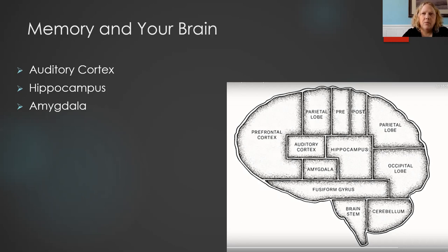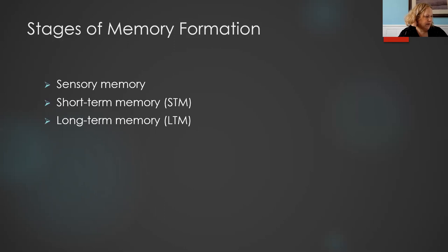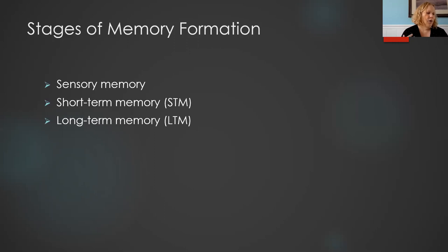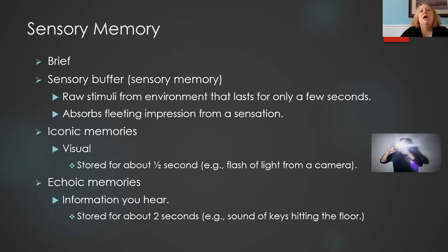People suffering from PTSD have problems getting rid of traumatic memories because of their emotional memories. We're going to talk about the three stages of memory. During these stages, not only can memory be saved and stored, but it can be lost or misplaced. First, sensory memory — this is all the information that our senses are taking in from the environment around us. Think of them as fleeting impressions.